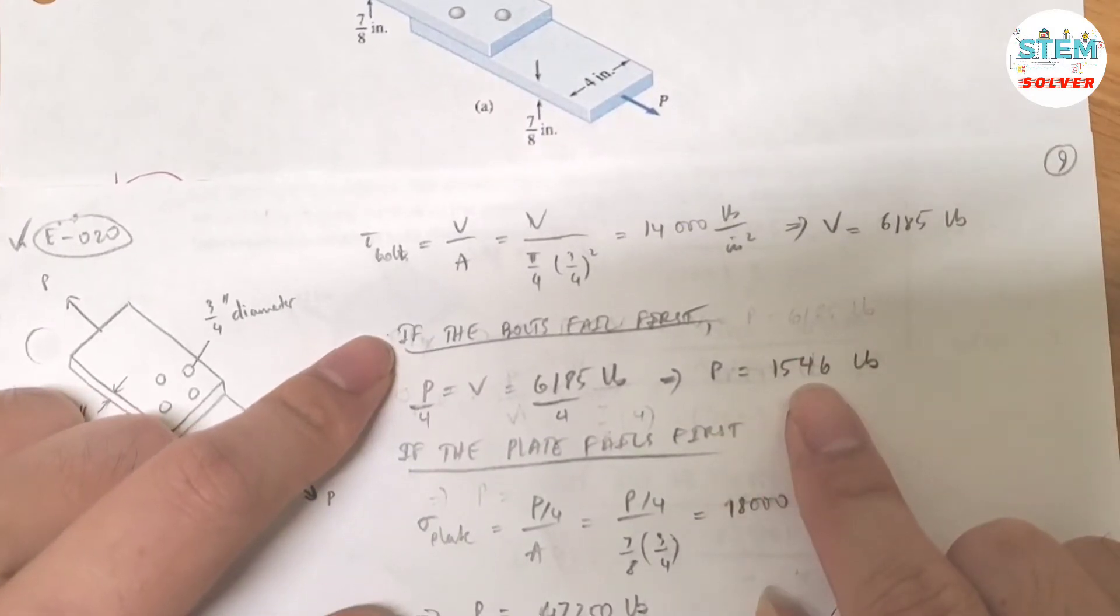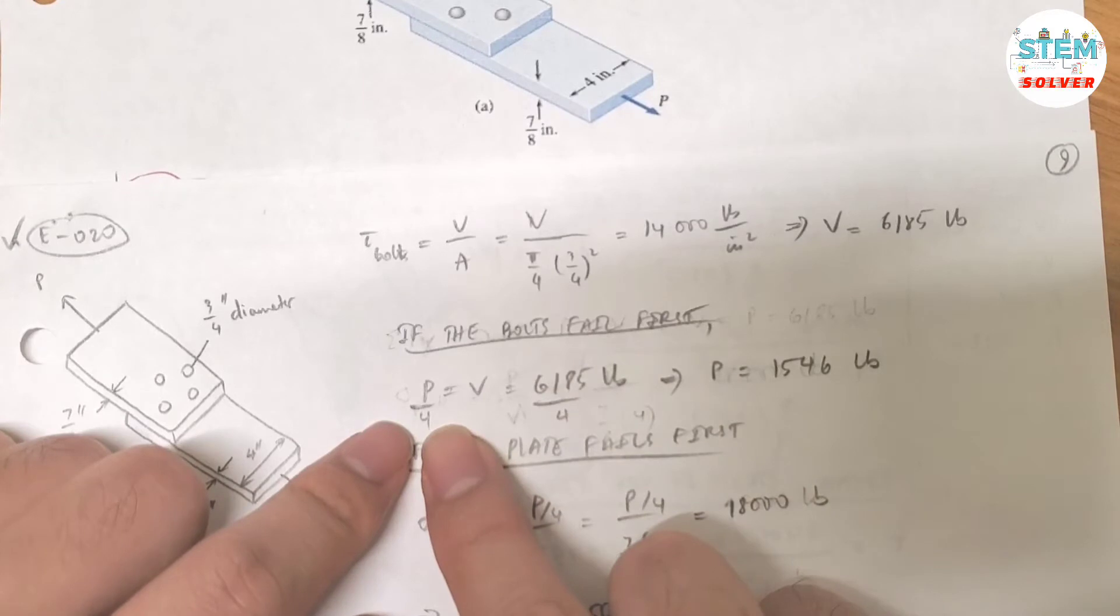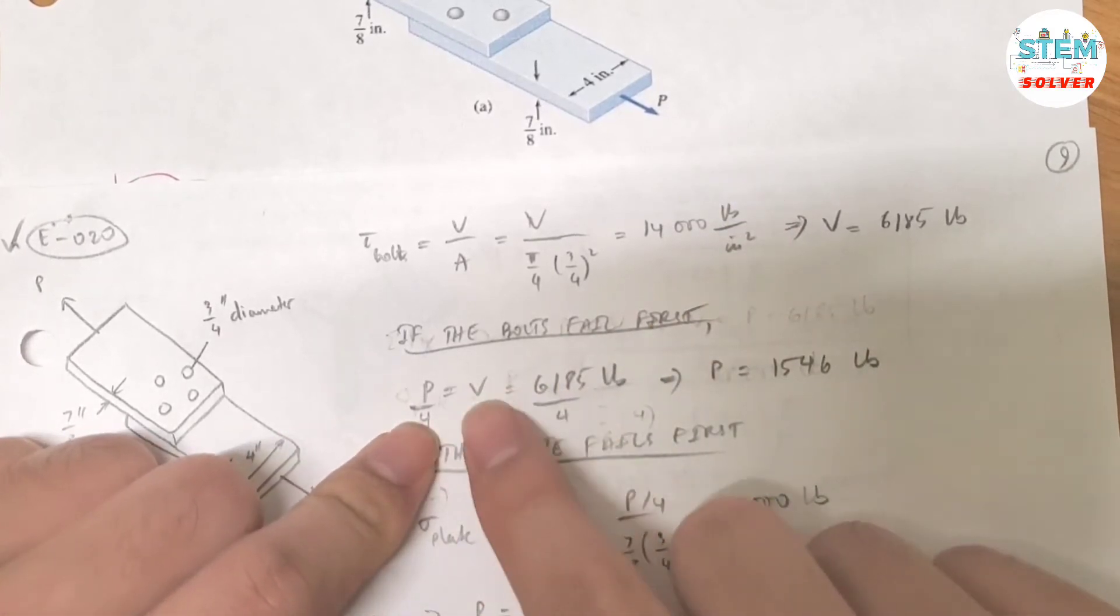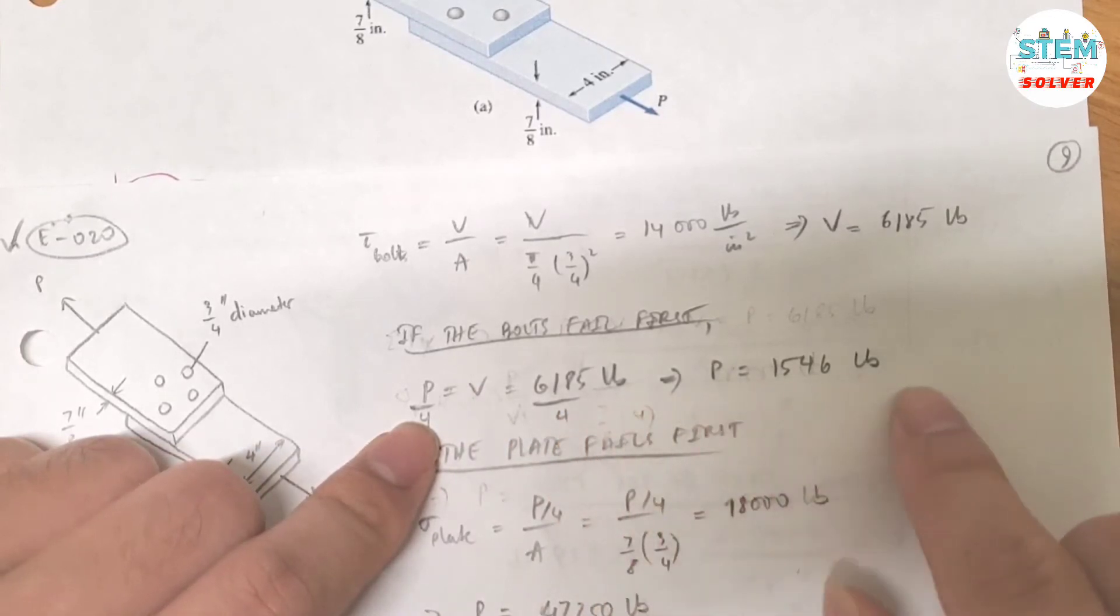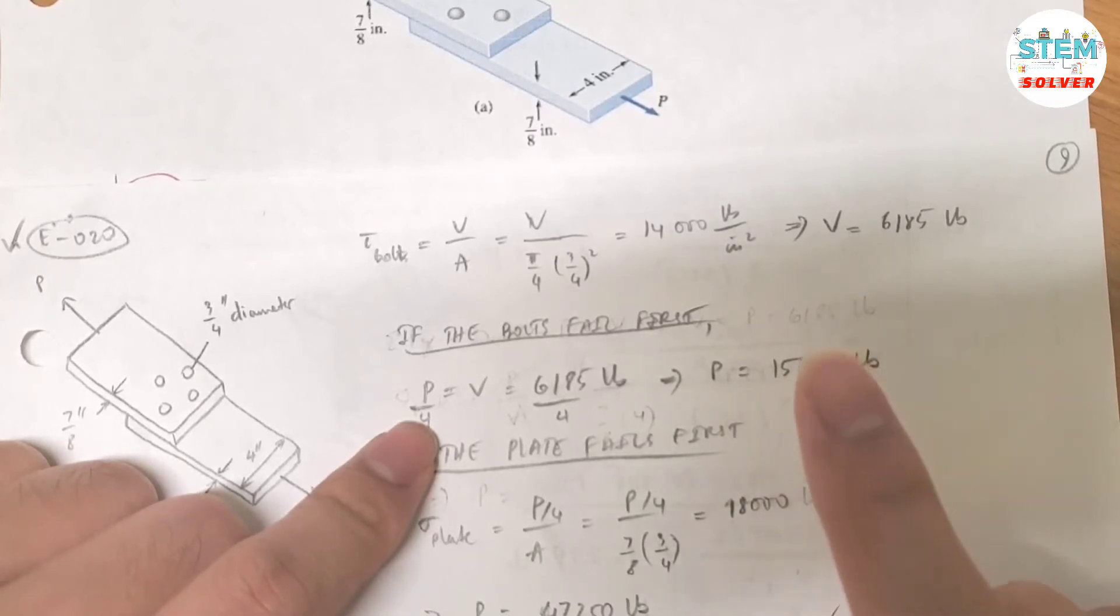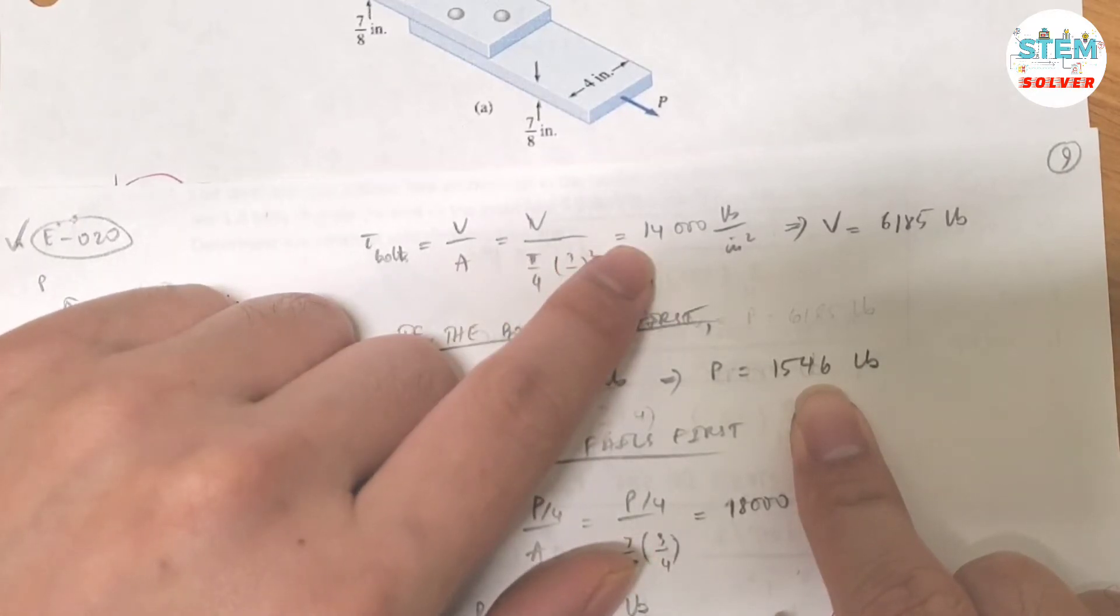So let's test for the case that the rivet fails first. The shear force equals the force P divided by 4. So you have 6,185 divided by 4. You get P equals 15,746 pounds. That is the maximum force you can apply to get the maximum shear stress.